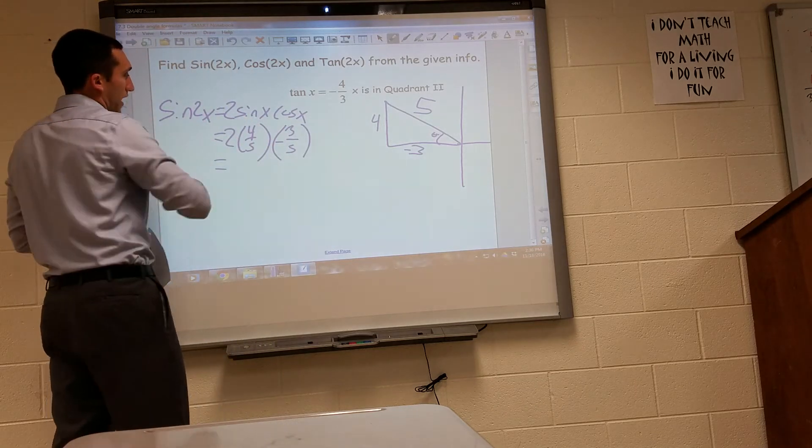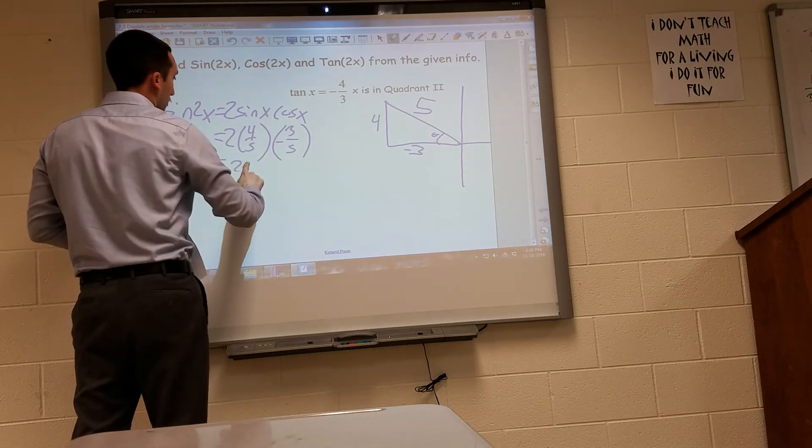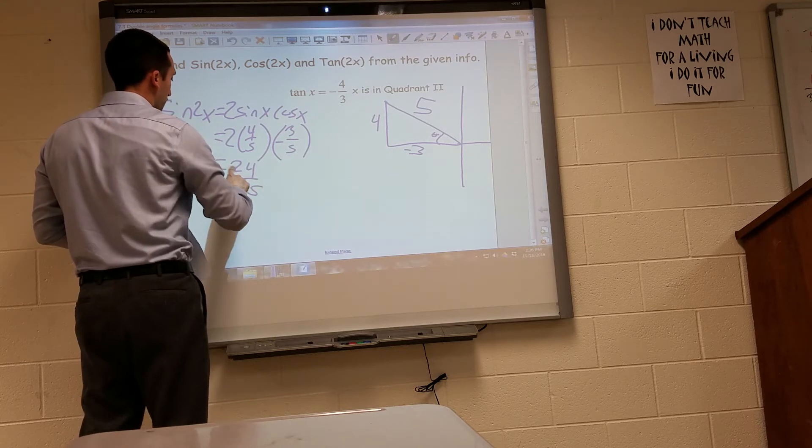So we go ahead and do that, multiply straight across. We get 24 twenty-fifths, negative.